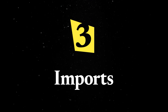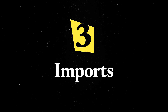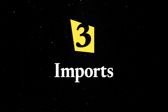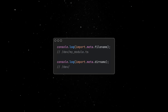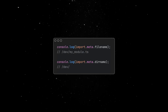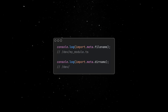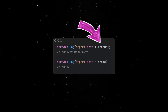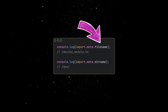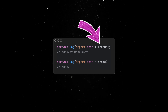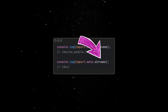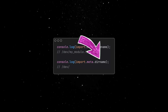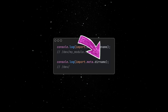Starting with 1.40, Dino supports the filename and dirname properties. These mirror the established CommonJS module system behavior, where filename provides the path to the current module file, while dirname provides the path to the directory containing the current module file.